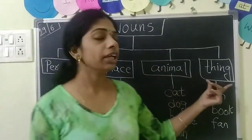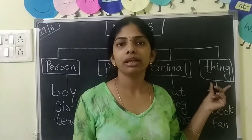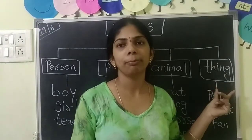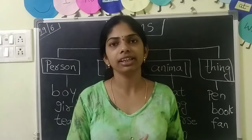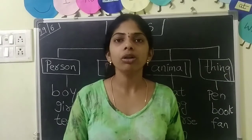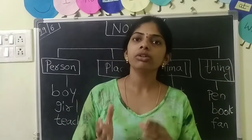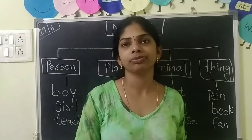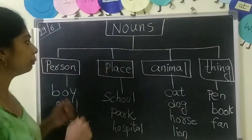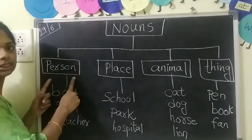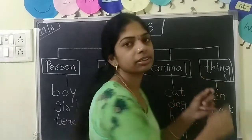So noun can be a thing. Thing means pen, pencil, book, clock, bottle, fan, light. All these are things. So noun can also be a thing. To summarize: a noun can be a person, place, animal, or thing.